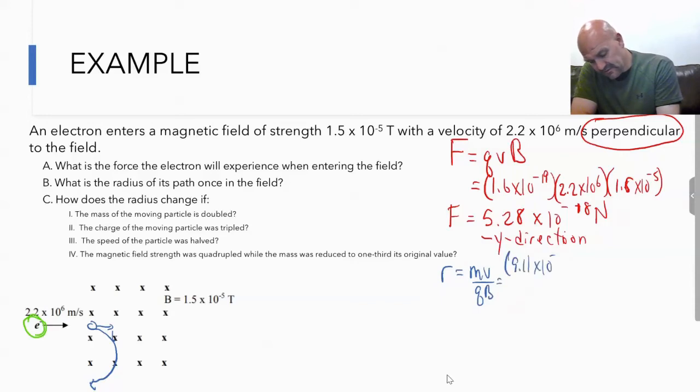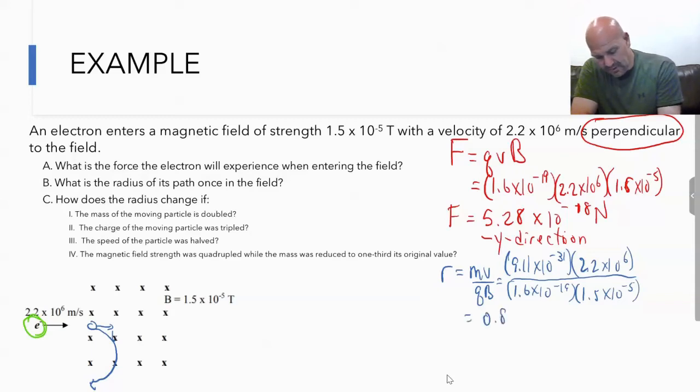The mass of the electron is 9.11 times 10 to the negative 31, v is 2.2 times 10 to the 6th, q is 1.6 times 10 to the negative 19th, and Tesla is 1.5 times 10 to the negative 5th. We find that the radius is going to be 0.84 meters, so the radius of this path would be 0.84 meters.